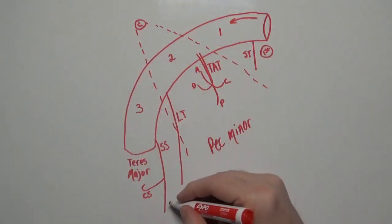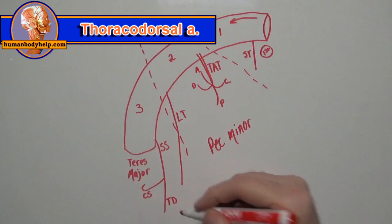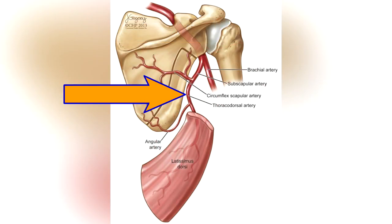The continuation of the subscapular artery is called the thoracodorsal artery. It travels inferiorly, running with the thoracodorsal nerve to supply the latissimus dorsi muscle.